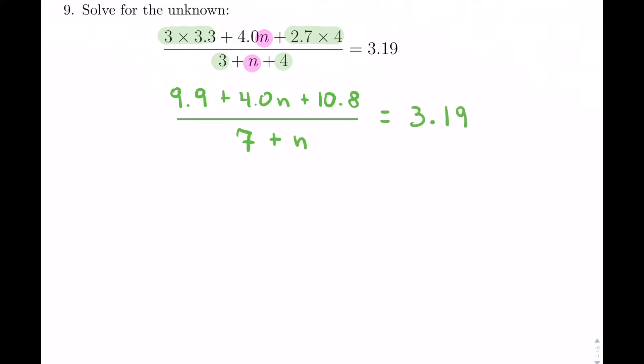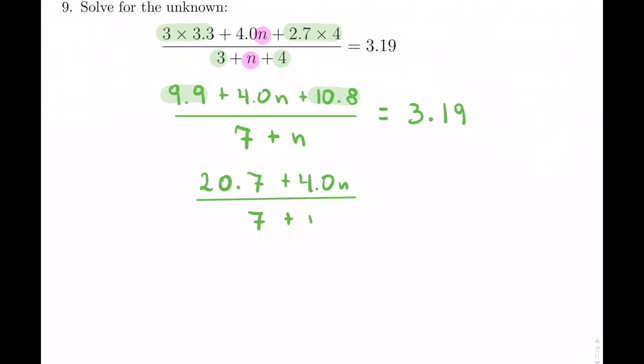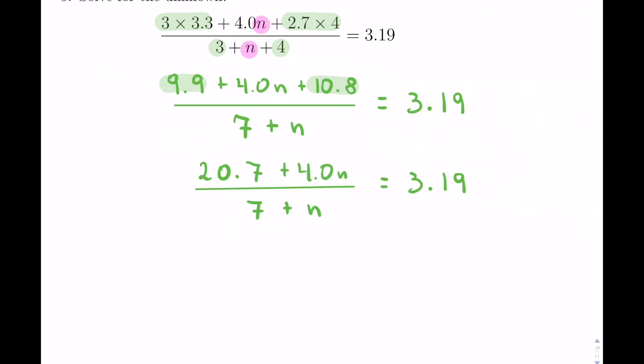Then I can divide. 3 plus 4 is 7, so this would be 7 plus n. Nothing to do on the right-hand side. I can still simplify a little bit more. I can take the 9.9 and add it to the 10.8, which gives me 20.7 plus 4.0n divided by 7 plus n equals 3.19.